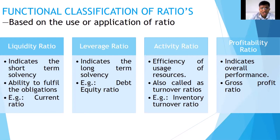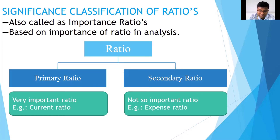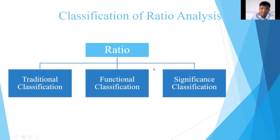The final classification is the significance ratio, also called importance ratios, where ratios are classified based on their importance to understanding a firm's position. There are two kinds: primary ratios — those that are very important and vital to calculate for the firm — and secondary ratios — those that are not as important and can be omitted without significant impact. With that, we have covered the three classifications of ratios: traditional, functional, and significance classification.